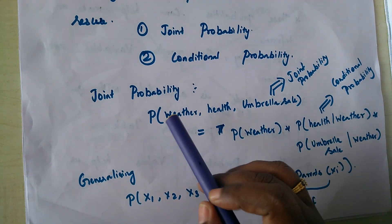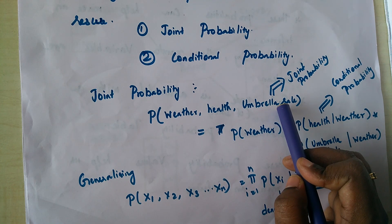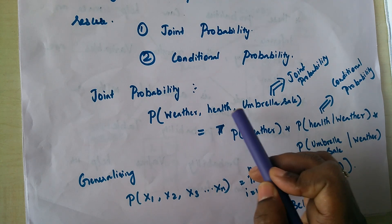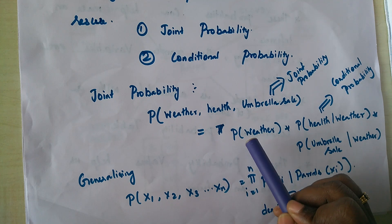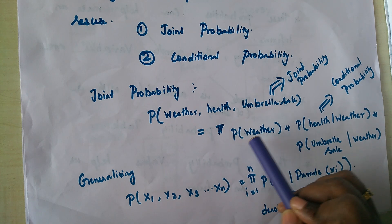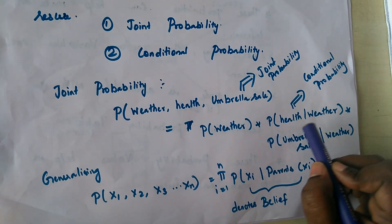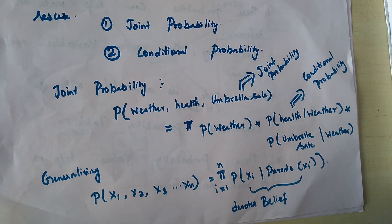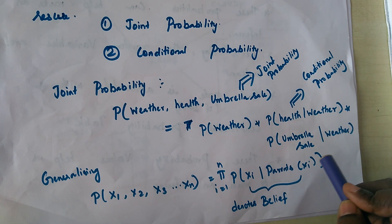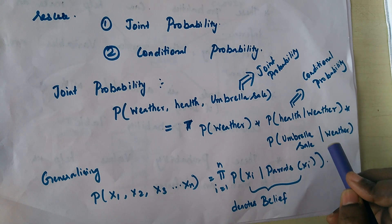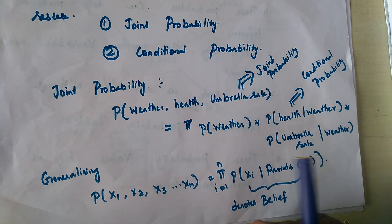The joint probability of all three random variables — weather, health, and umbrella sale — is given by the product of the probability of weather, multiplied by the conditional probability of health given the weather, multiplied by the probability of umbrella sale.